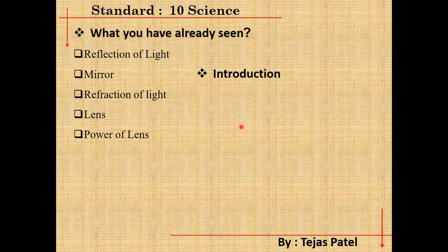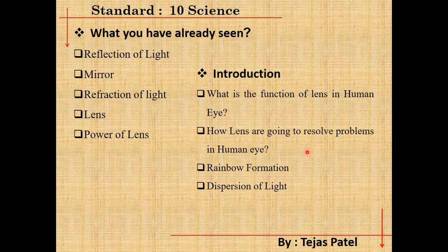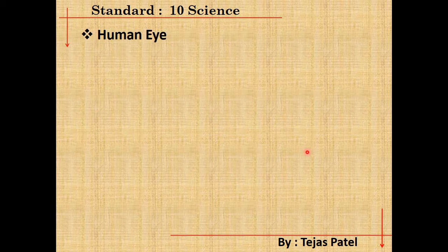Now in chapter number 11 we are going to talk about the function of the lens in the human eye and how we can see different objects with its help. Lenses are also used to resolve problems in the human eye, so we will define the defects of vision and their corrective actions. Then, based on atmospheric refraction and dispersion of light, we will study phenomena like rainbow formation and the colour of the sky.